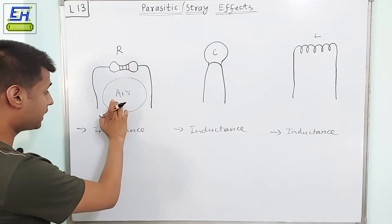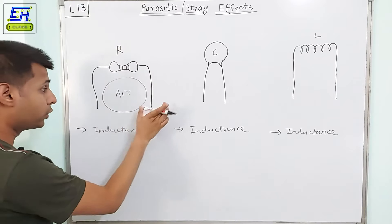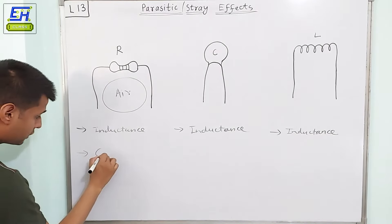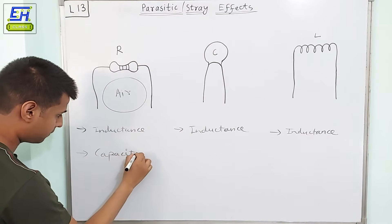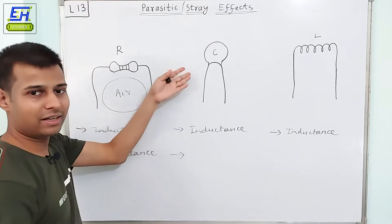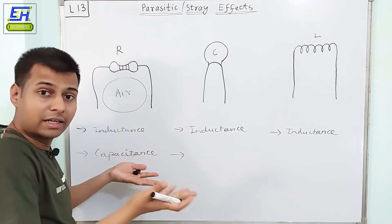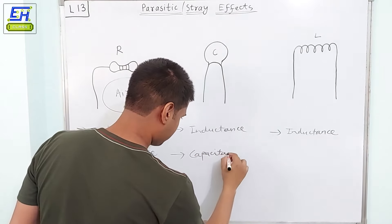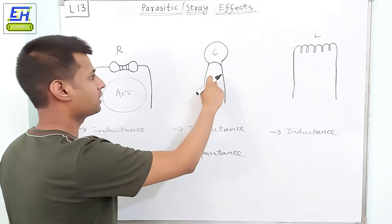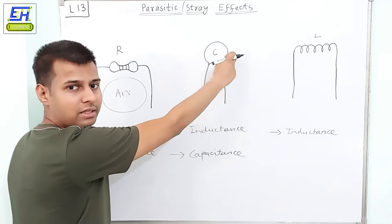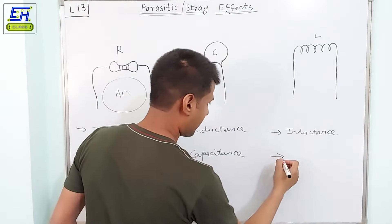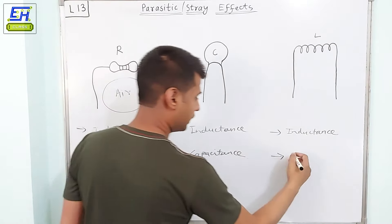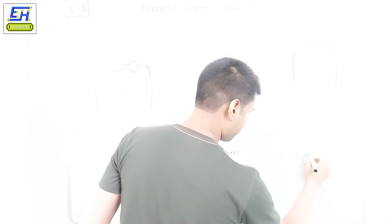And that's why even here in the resistor, due to its leads, there will be a small value of capacitance. A capacitor itself inherits the property of capacitance, so definitely the capacitance from its leads will combine with its own internal capacitance. And again, even in the inductor, you have two leads separated by distance, so it will again have some capacitance.